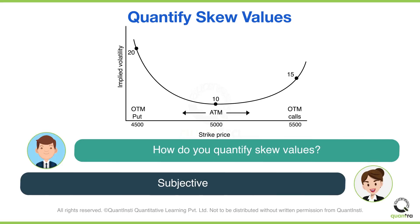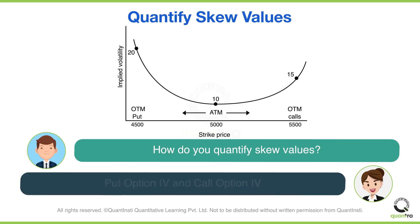How do you quantify skew values? The first step is to calculate the put option IV and call option IV. You can do this for all the strikes for a particular expiry date. If your data already provides IV values, this step is not required — you can directly use those values.